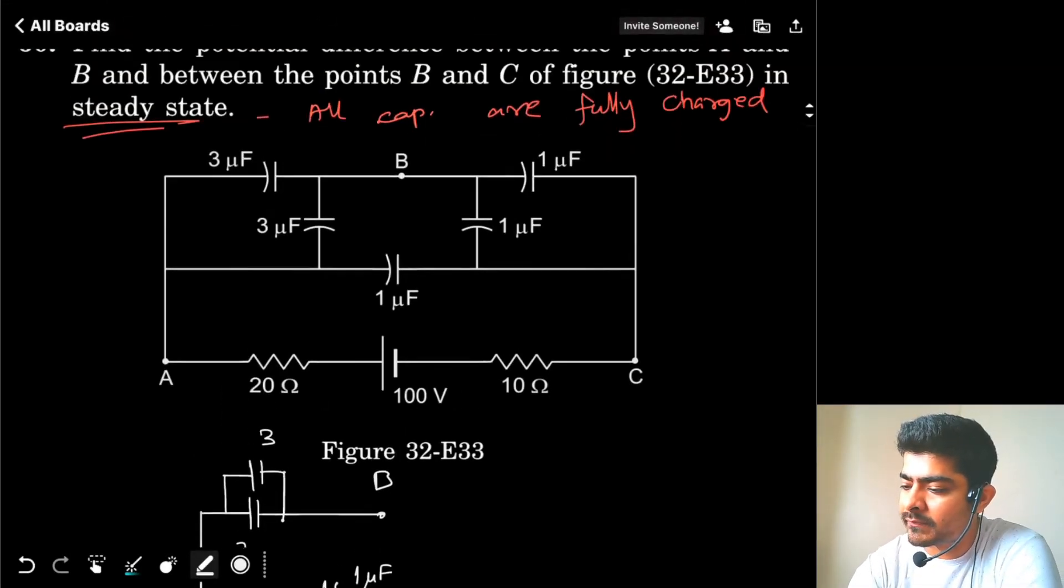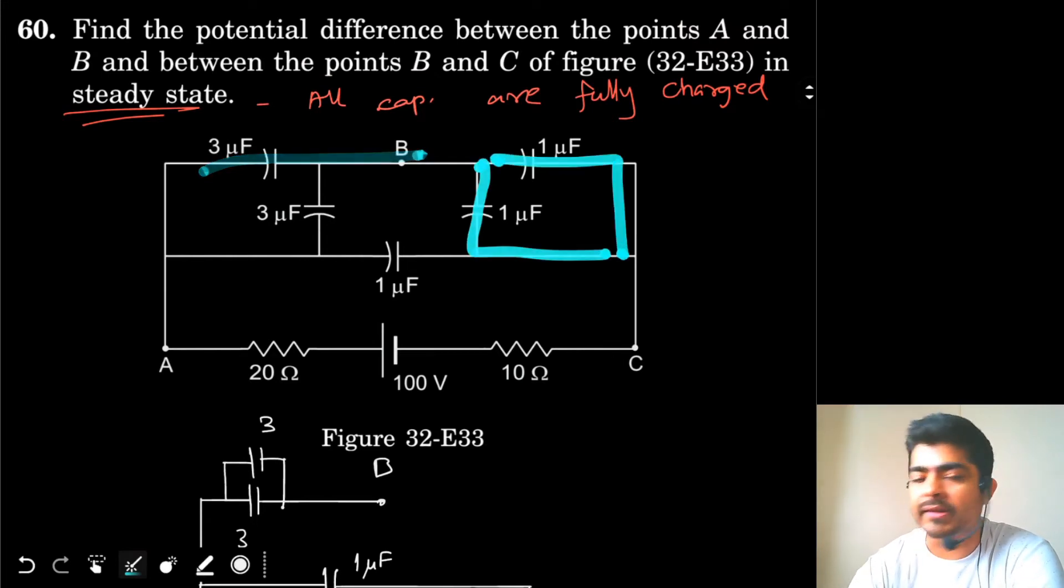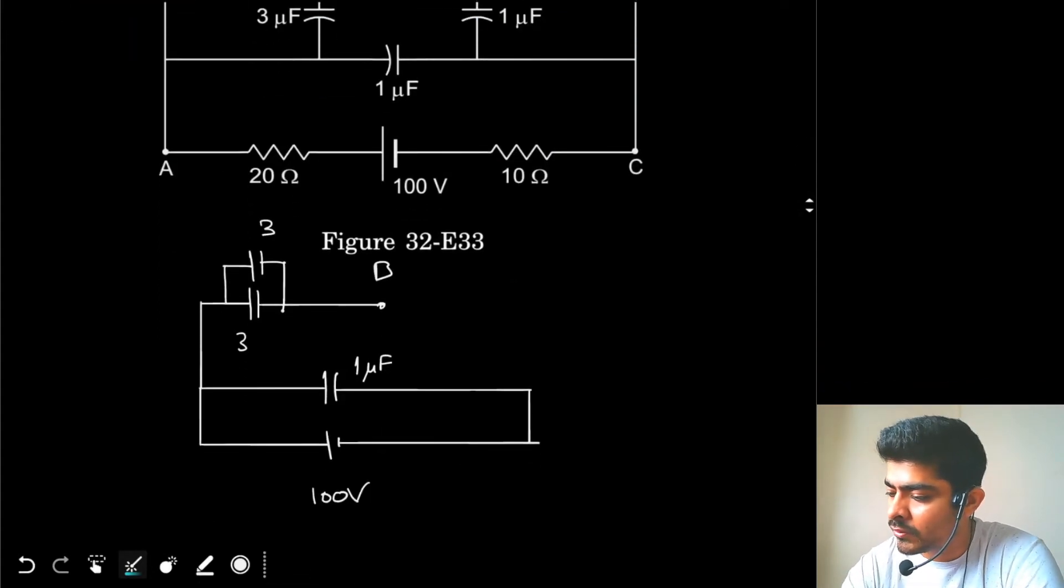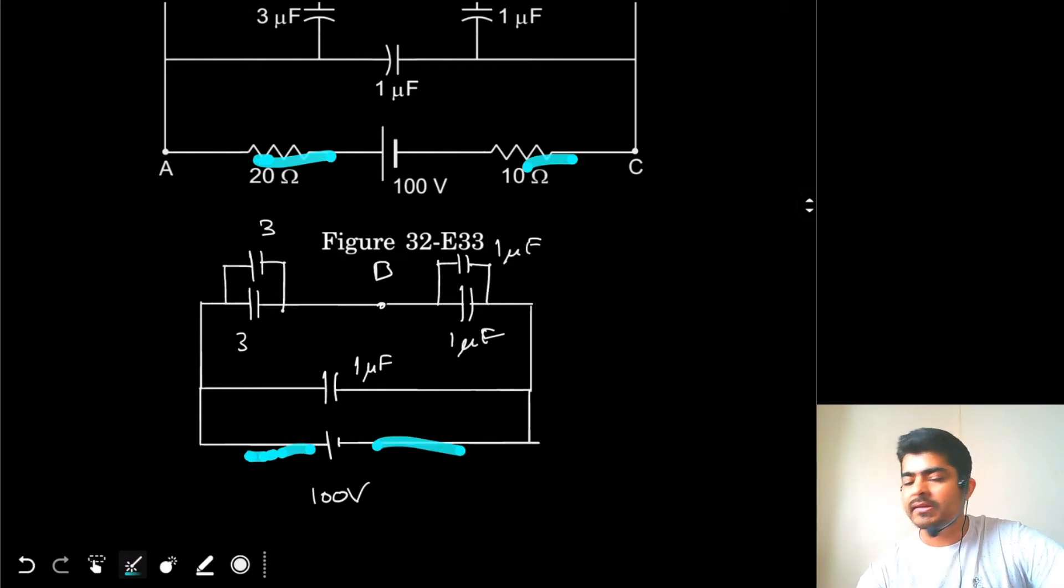And then I get my point B. I have reached my point B. Again 1 and 1, these two are again in parallel to each other, so again I can draw over here. And then I have again one more 1uF capacitor. So 1uF and 1uF. So this is my circuit now completed. And like you can see I have removed the resistors because it is in steady state, so the resistors are of no use. There is no current flowing anywhere.